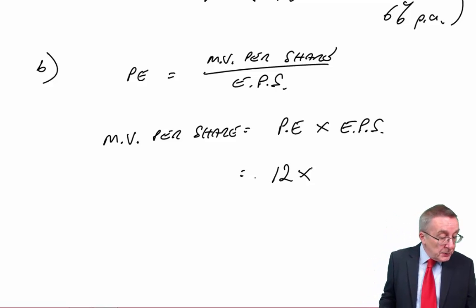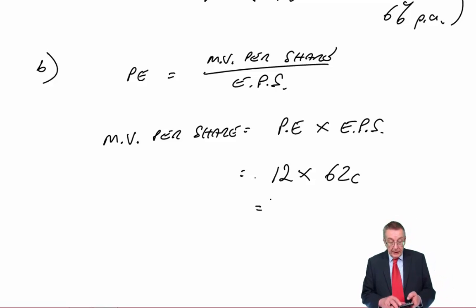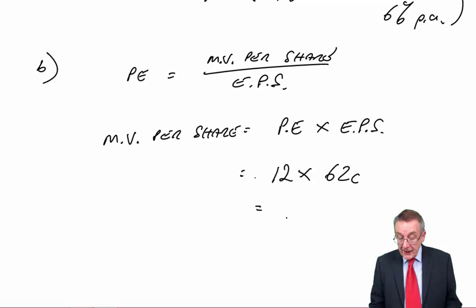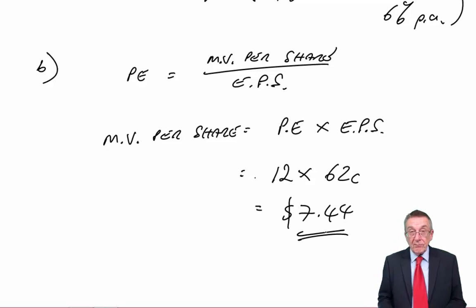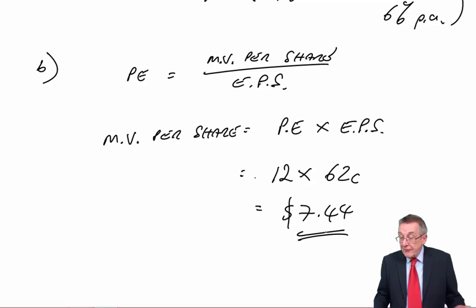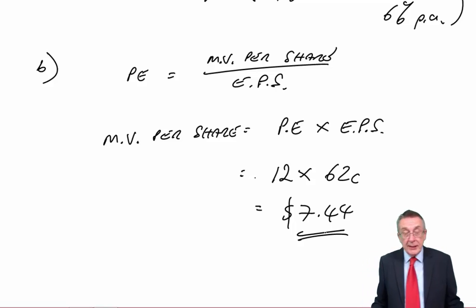So, P equals 12. We apply the P-E ratio of similar company to our current earnings. PEs are calculated on the current earnings, to our current earnings, which in 2014 are $0.62, which gives a market value per share of $7.44. And for the arithmetic, there we are. Very common for him to throw in bits of PE valuations. There's really no excuse there.